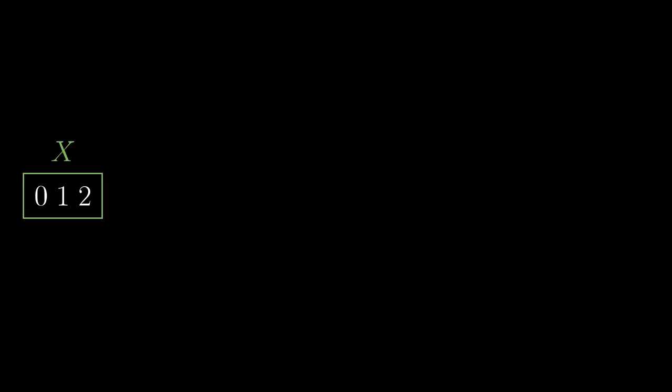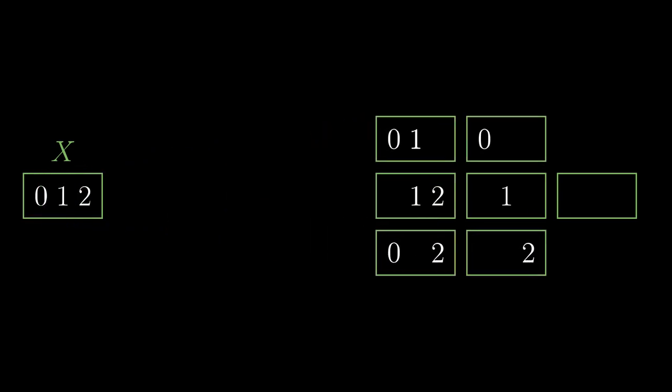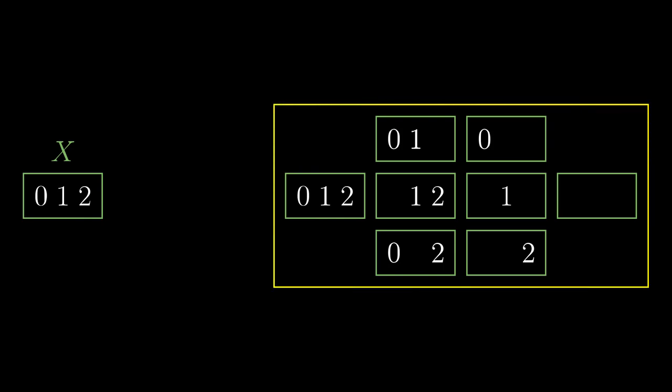The operation of taking all subsets of a set is a pretty common procedure in set theory as well. Take a set X, for example the set of numbers zero, one, two, and consider all the subsets: the empty set, three subsets containing just one element, three subsets containing two elements, and the set itself, and pack it into another set. The operation is denoted by a calligraphic P, meaning power set.